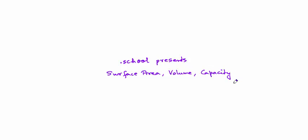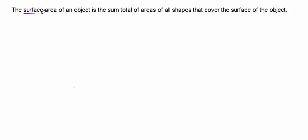Dotskill presents Surface Area, Volume and Capacity. The surface area of an object is the sum total of the areas of all shapes that cover the surface of the object.